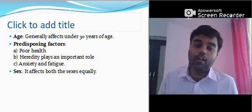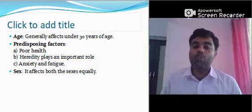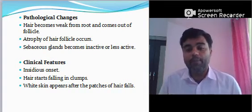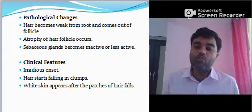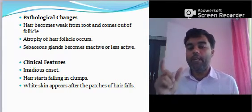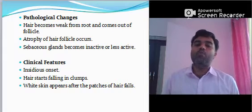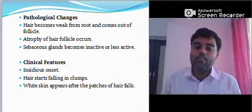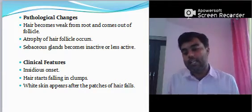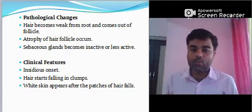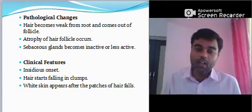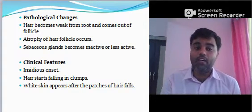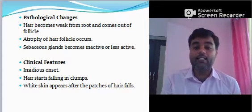These are the main causes but not proven, so they are placed under predisposing factors. Sex: it affects both sexes equally. Pathological changes — how it happens: our main key term is inflammation. Hair becomes weak from the root and comes out of the follicles. Atrophy of hair follicles occurs. Sebaceous glands become inactive or less active. Clinical features: obviously insidious onset. Hair starts falling in clumps. White skin appears after the patches of hair fall — at that particular area, white skin appears.